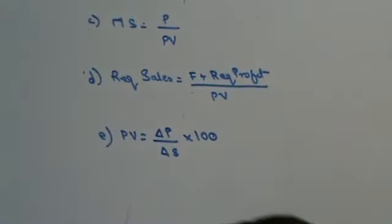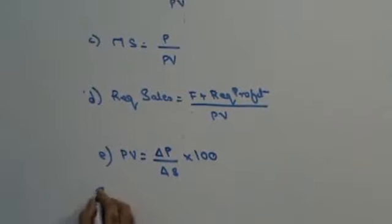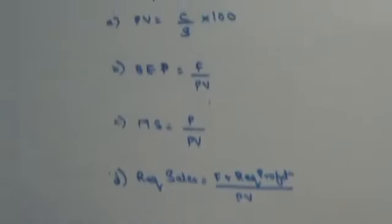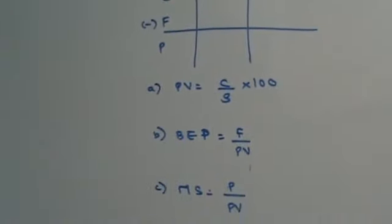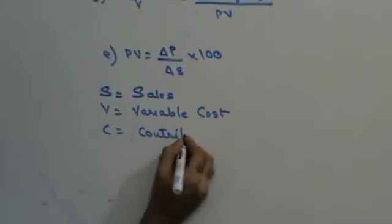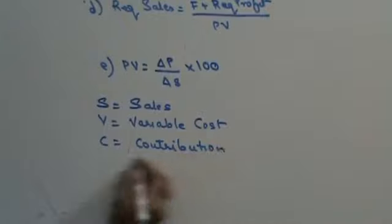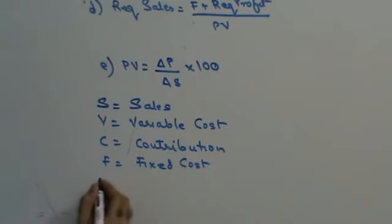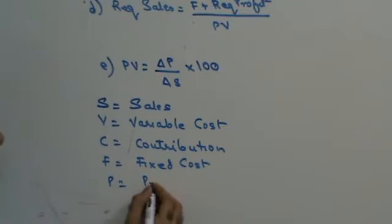Let us see what each of the symbols stand for. S stands for sales. V stands for variable cost. C stands for contribution. F stands for fixed cost. P stands for profit.